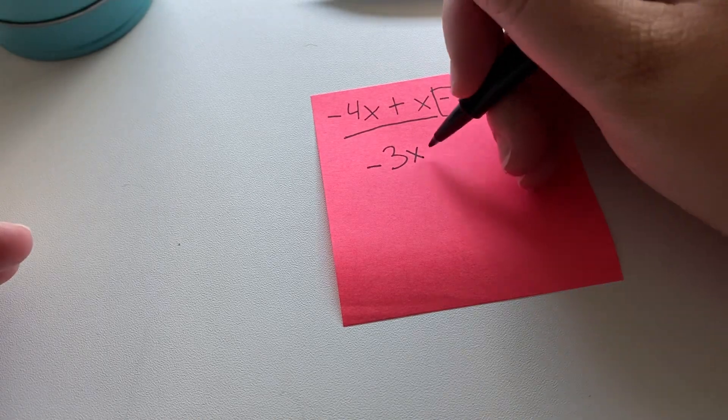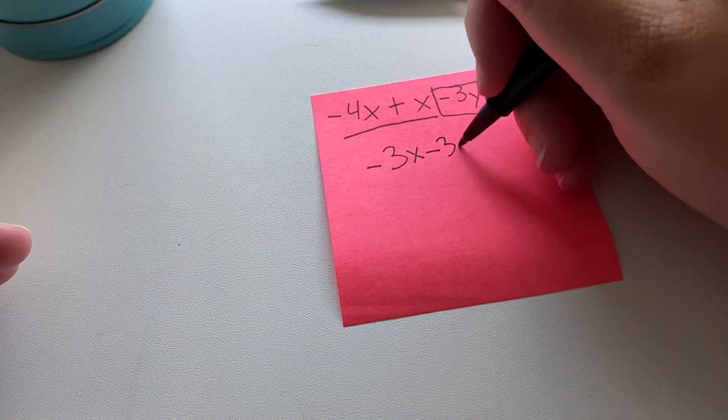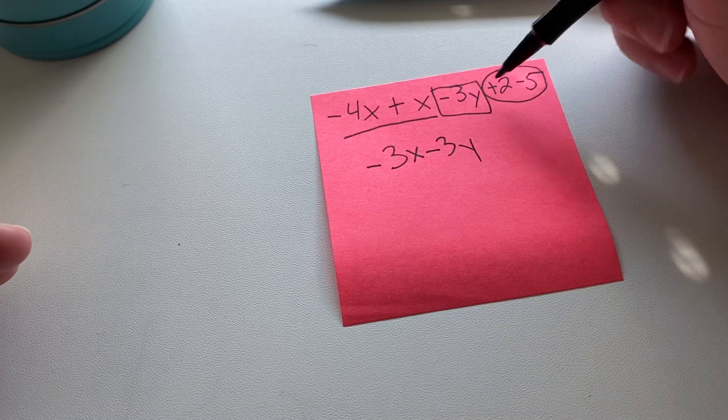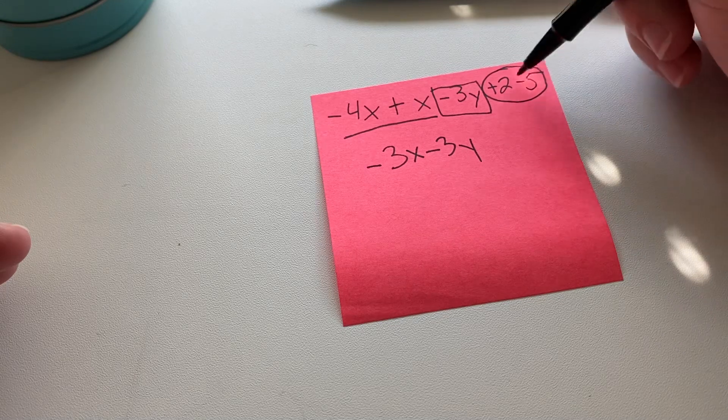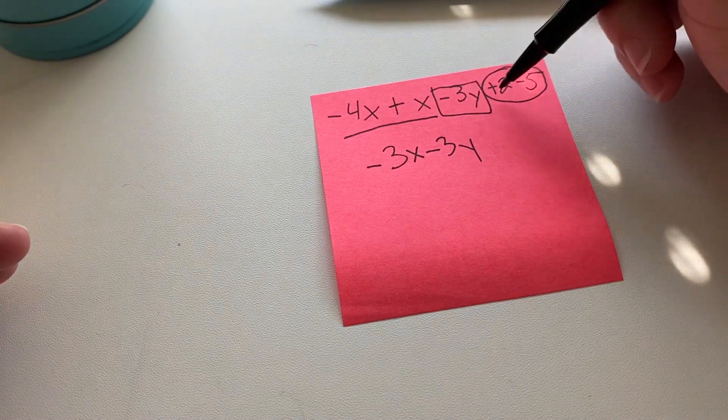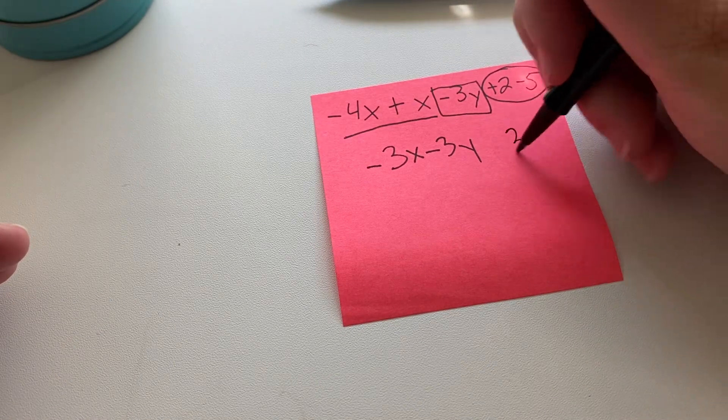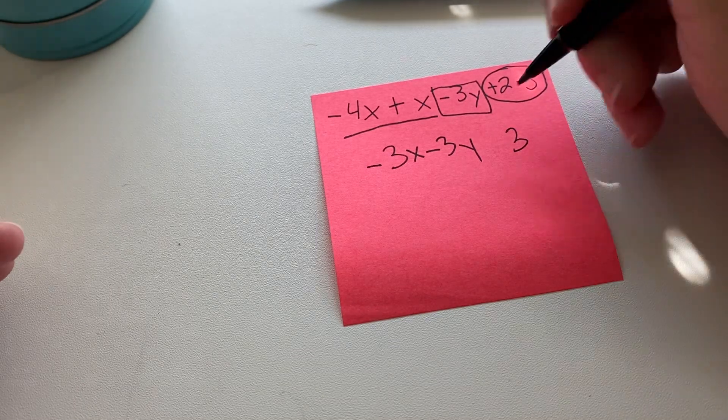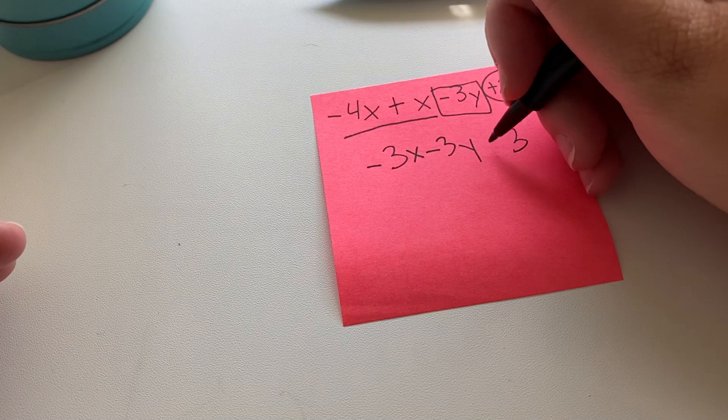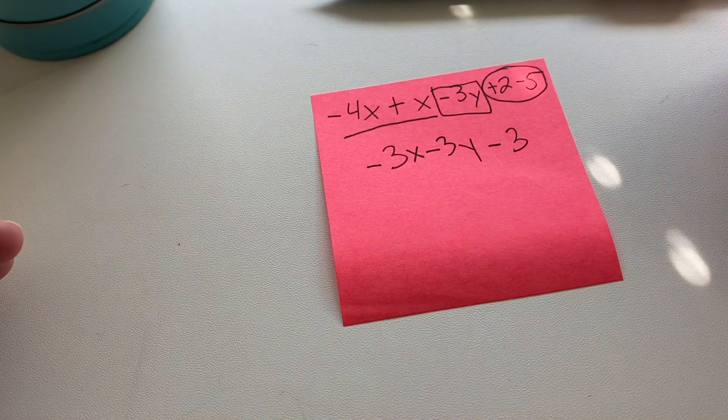There's really nothing to do here with the negative three y. And then here, these are also integers. We have more negatives than we do positives. So we're going to subtract. We get three. Keep the sign of the bigger digit, which is five. So it's going to be negative three.